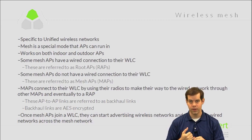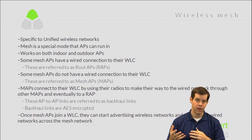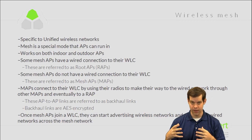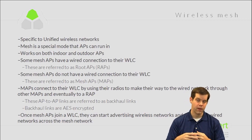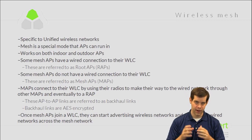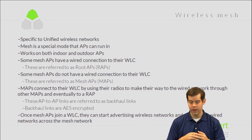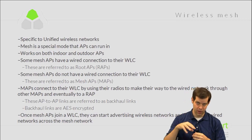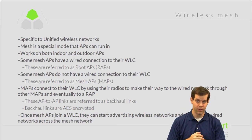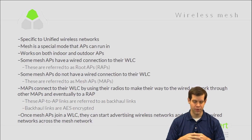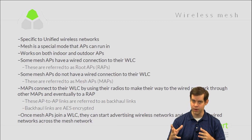Some mesh APs will connect up to their wireless LAN controller through their wired interface. Even though we're talking mesh in a special mode, it's unified, so we're still joining up to controllers. Root APs, or RAPs, join up to their controllers through their wired interface — they're the link to the wired network. Then we have APs that do not have wired connectivity to their controllers; they connect wirelessly, hopping across mesh APs back to the RAP and then all the way to their controller. These are called MAPs, or mesh APs. The distinction is simple: RAP has a wired connection to the controller; MAPs do not.